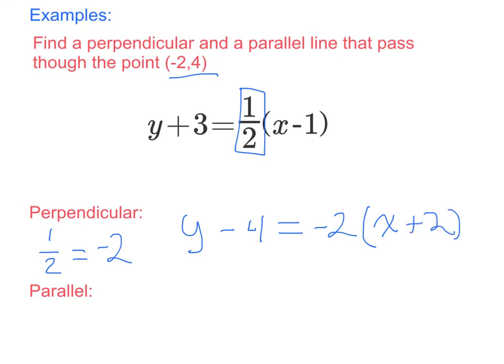Remember, it's plus 2 because the signs change. Parallel lines are easier because they have the same slope. We don't need to change the slope, just the point. So our new equation is y minus 4 equals the same slope, 1/2, times x plus 2 again.